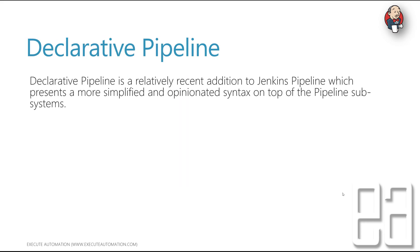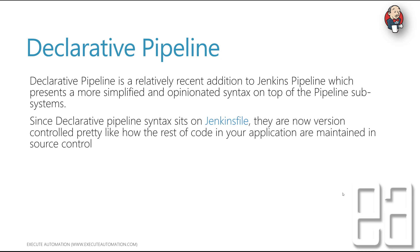The declarative pipeline is a relatively recent addition to Jenkins pipeline which presents a more simplified and opinionated syntax on top of the pipeline subsystem itself. Since declarative pipeline syntax sits in the Jenkinsfile, it is now version controlled, just like the rest of your application code. Even if the Jenkins master is destroyed, everything will be resurrected automatically based on the Jenkinsfile in your source control repo.